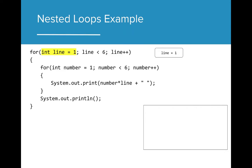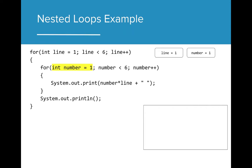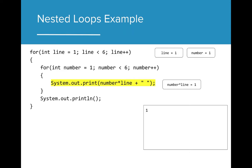The loop begins by initializing the line variable. Next, the for loop checks the condition of the boolean expression to determine if the for loop should execute. Since line is less than 6, the loop will execute. The first line of code in the for loop happens to be another for loop. Now we initialize number from the inner for loop and set its value to 1. Since number is less than 6, the inner for loop will begin to execute. The only line of code in the inner for loop is a print statement. This print statement is multiplying the value of line and number.